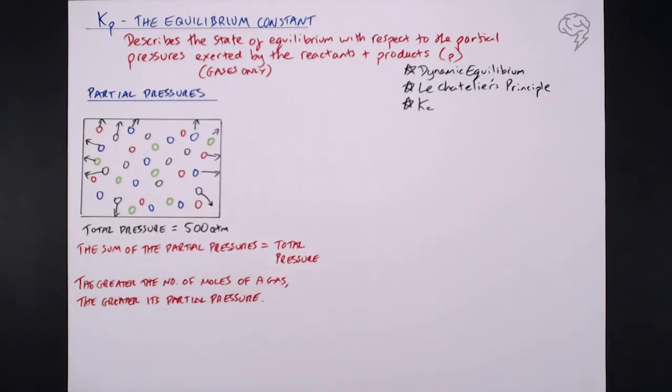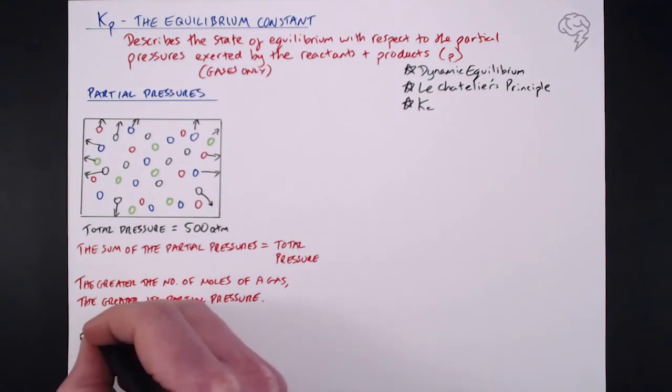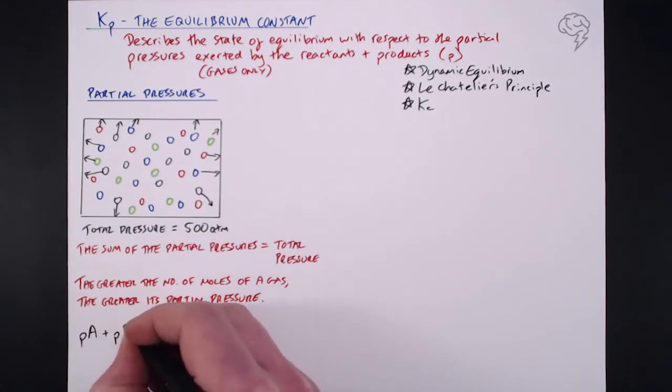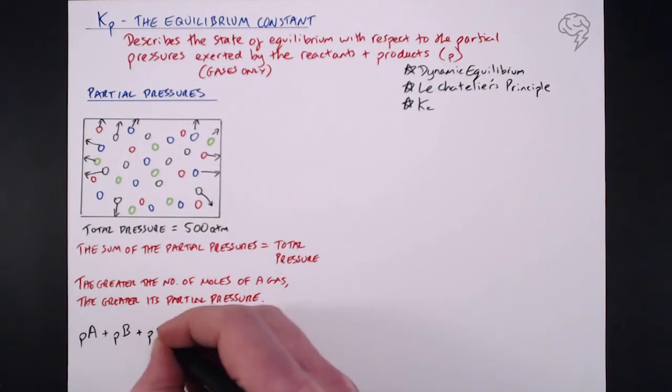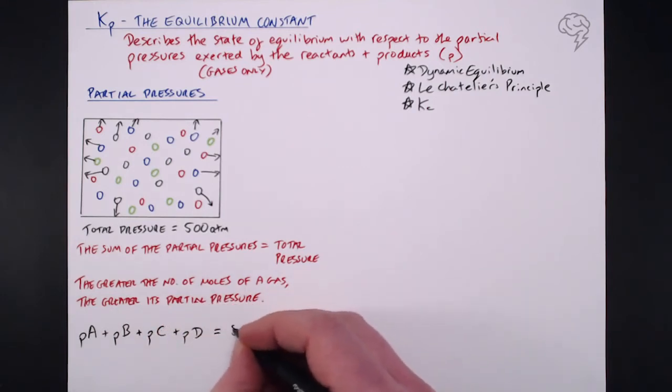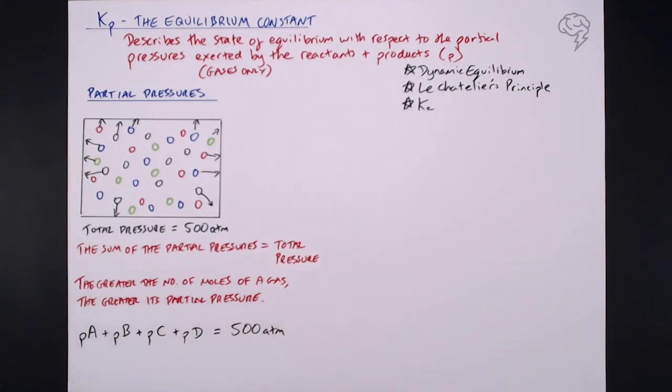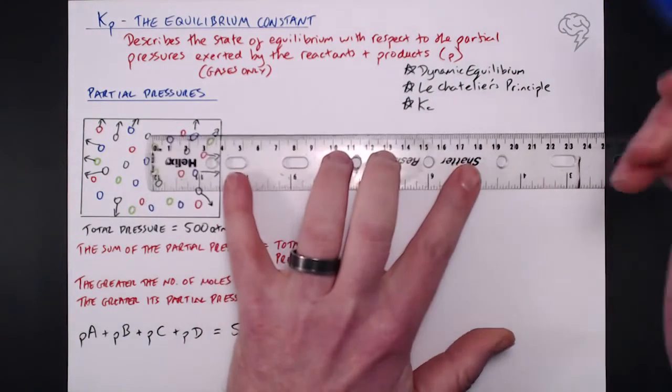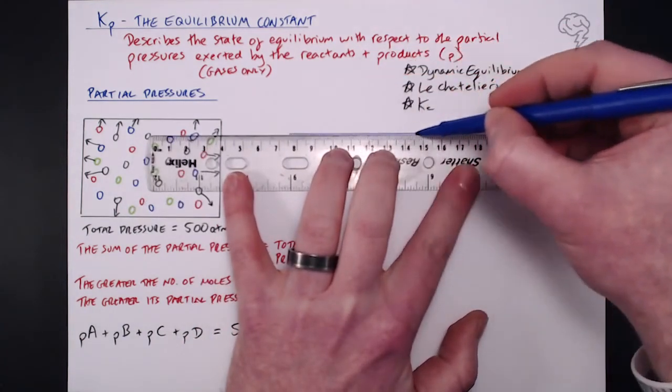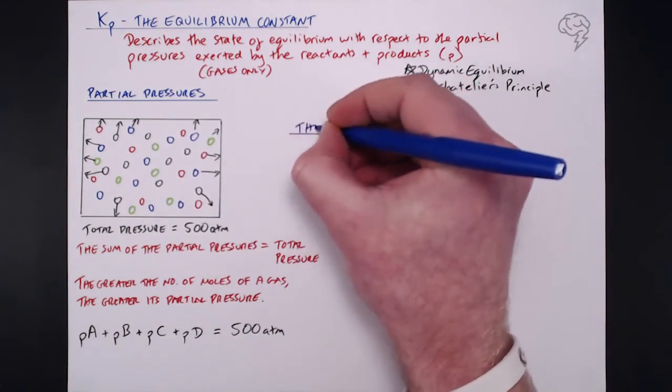So if we just take our four different gases here as A, B, C and D, the four different colors. What we can say is that the partial pressure of A plus that of B plus that of C plus that of D gives us a total pressure of 500 atmospheres. So as we just said, the sum of the partial pressures exerted by each gas equals the total pressure in a system. So the question is, how do we go and put that in an expression? What is the expression for Kp?